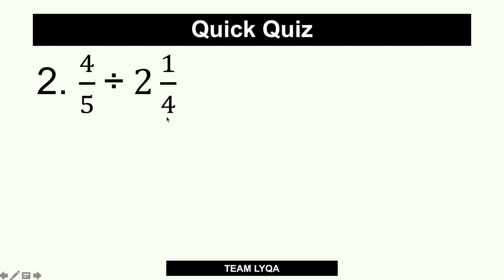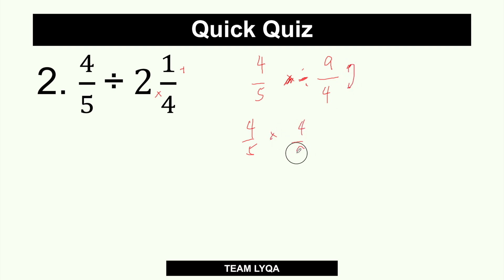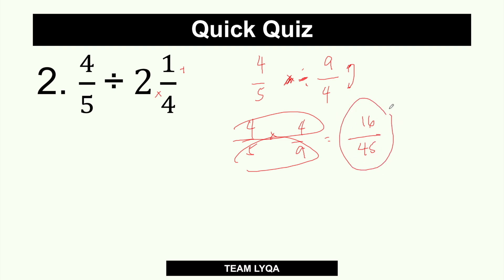Second problem: 4/5 divided by 2 and 1/4. Both need to be fractions first. So 4/5, and then convert 2¼ to an improper fraction: 2 times 4 is 8, plus 1 is 9 — so 9/4. To make it multiplication, flip the second fraction: 4/5 times 4/9. Multiply: 4 times 4 is 16, over 5 times 9 which is 45. Since 16 and 45 have no common factor, the answer is 16/45.